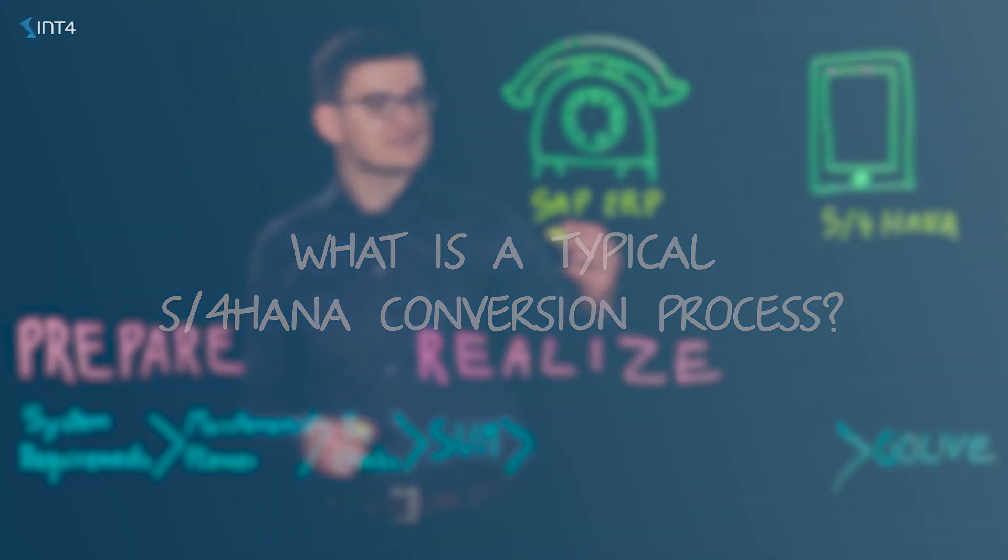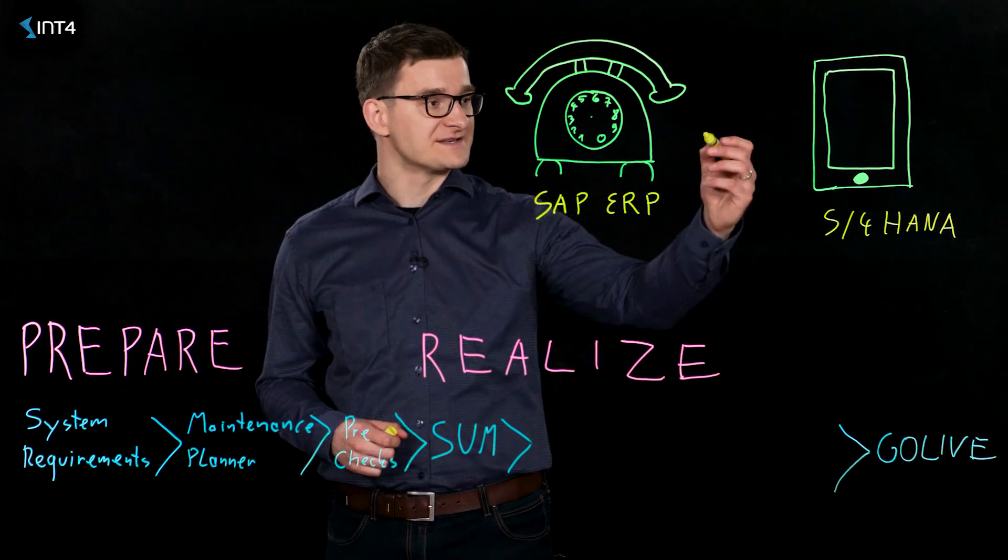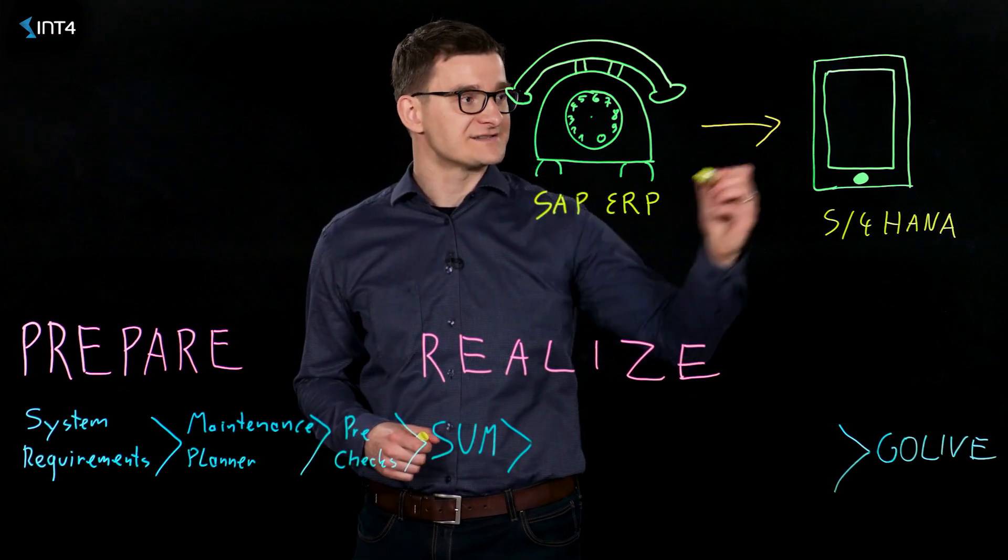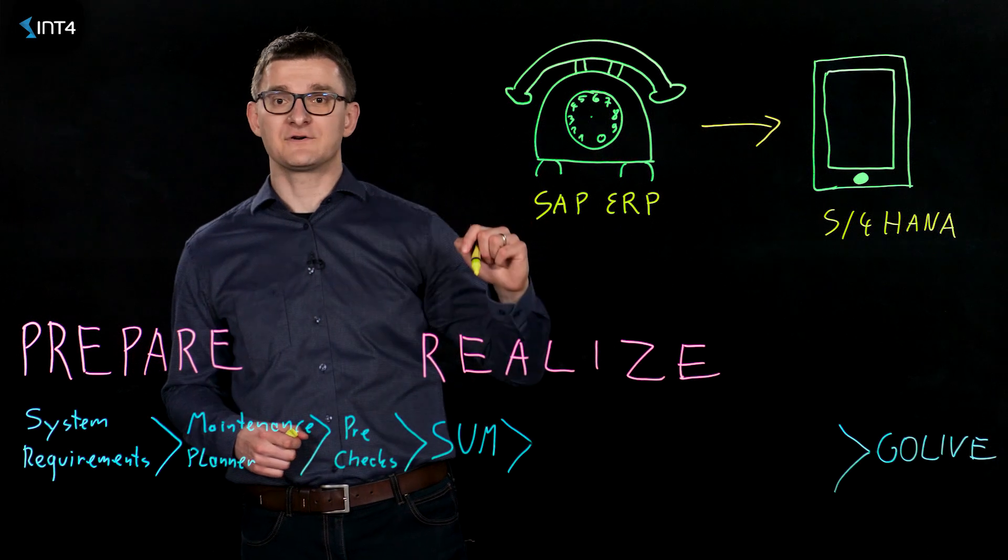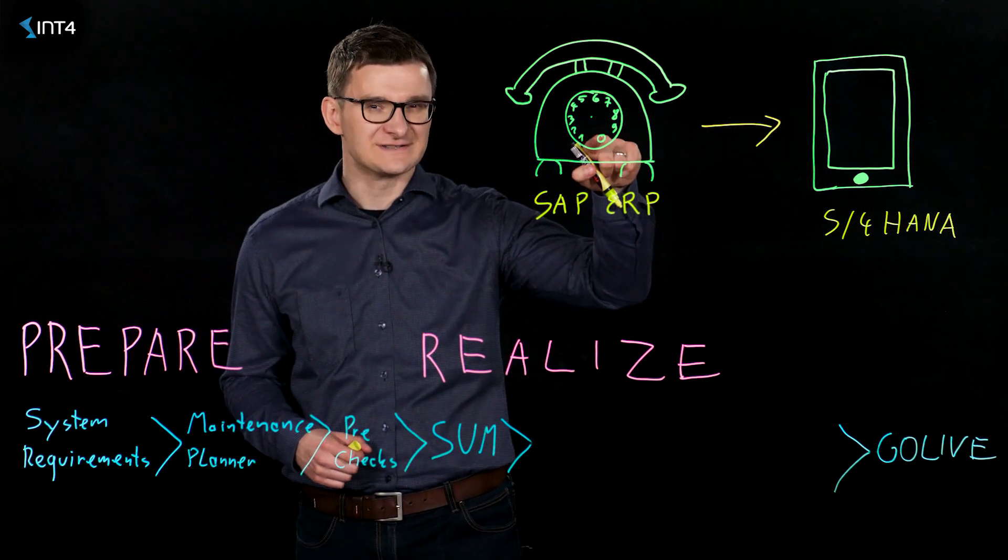Let's start with defining what a typical S4HANA conversion process is. So basically, it's a move from your old SAP ERP system to the S4HANA system. And by the way, for those of you that don't know, this is an actual telephone.